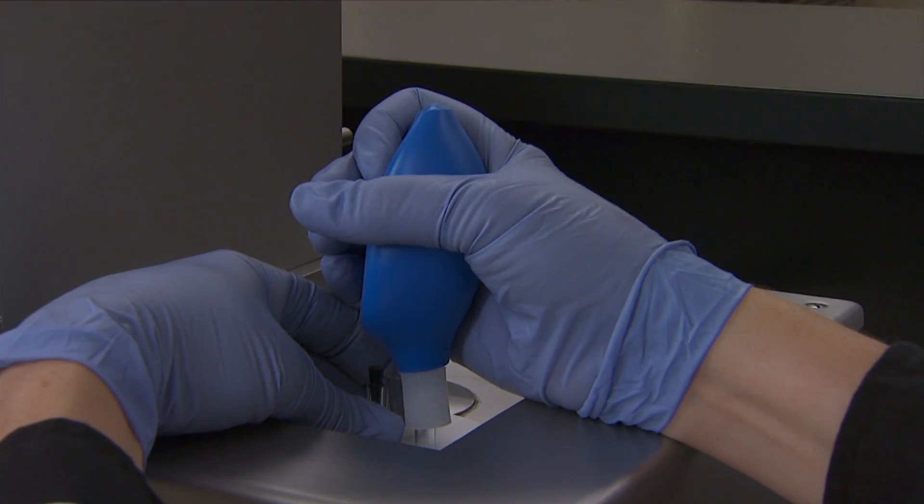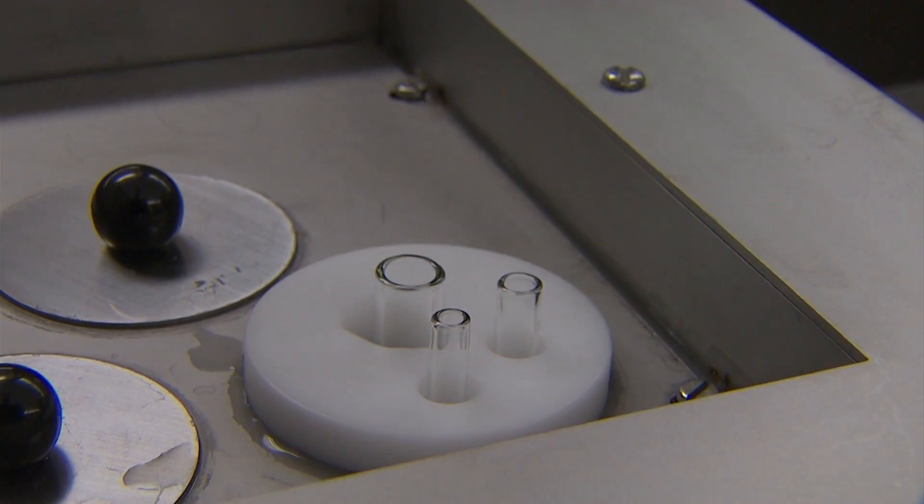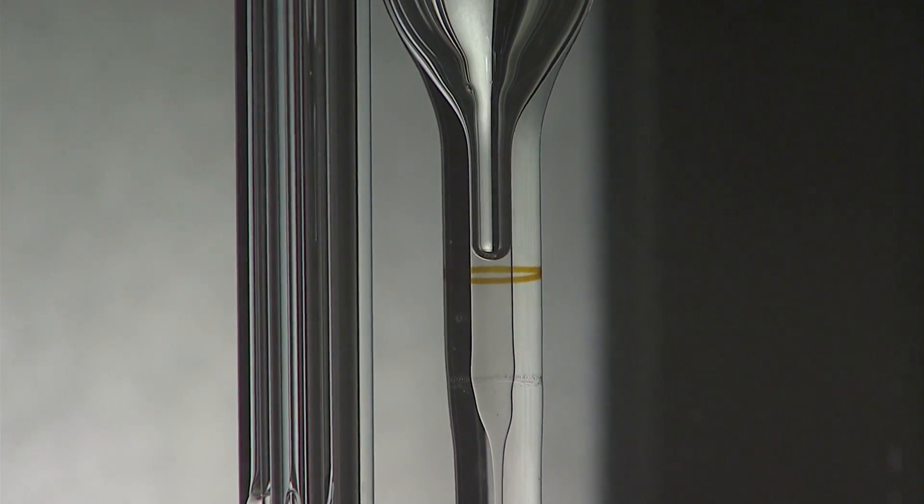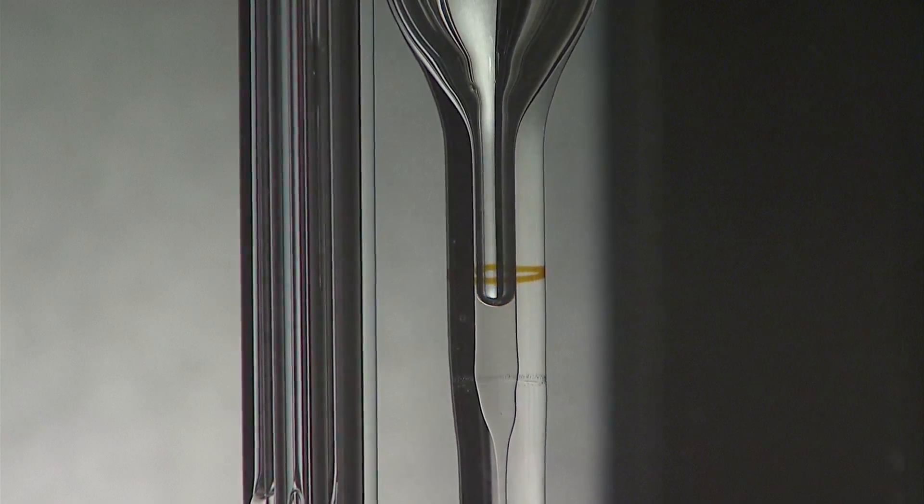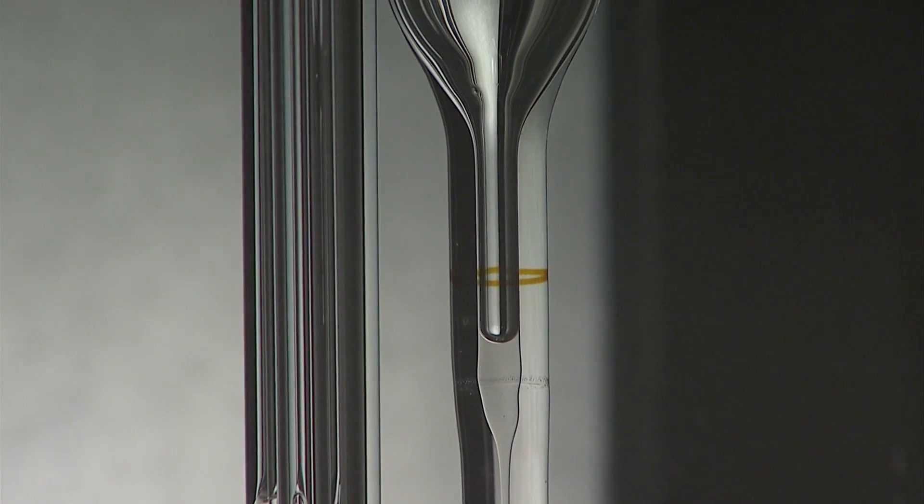Kinematic viscosity of a fluid is a property that indicates the fluid resistance to flow. Kinematic viscosity is determined by measuring the time for a volume of liquid to flow under gravity through a calibrated glass capillary viscometer.